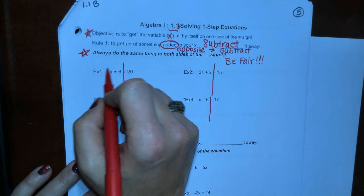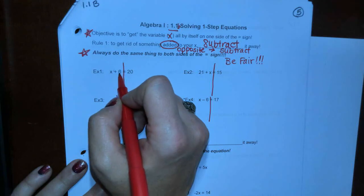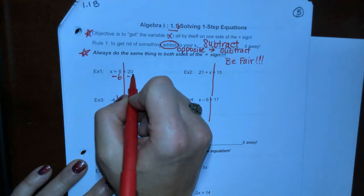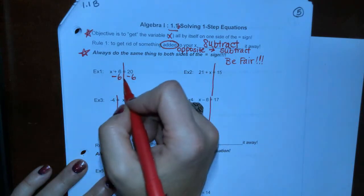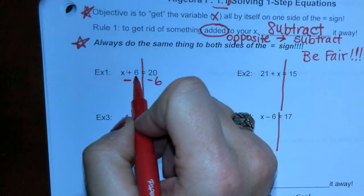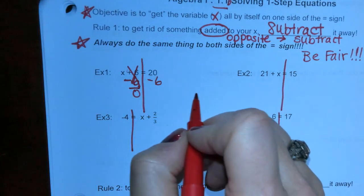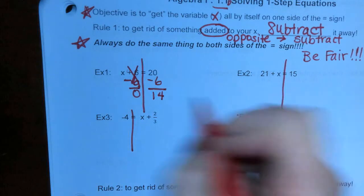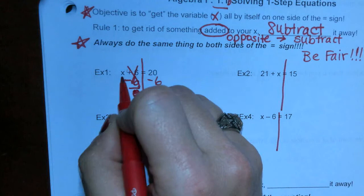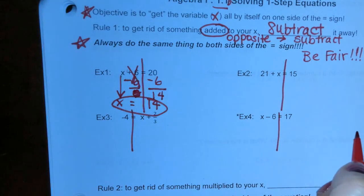So we're solving for x. We have to get x by itself. We have to ask what is happening to x — well, 6 is being added to it. So what's the opposite? Subtraction. We're going to subtract 6 from both sides. 6 minus 6 is 0, and 20 minus 6 is 14. This cancels out, so x equals 14. That's your answer.